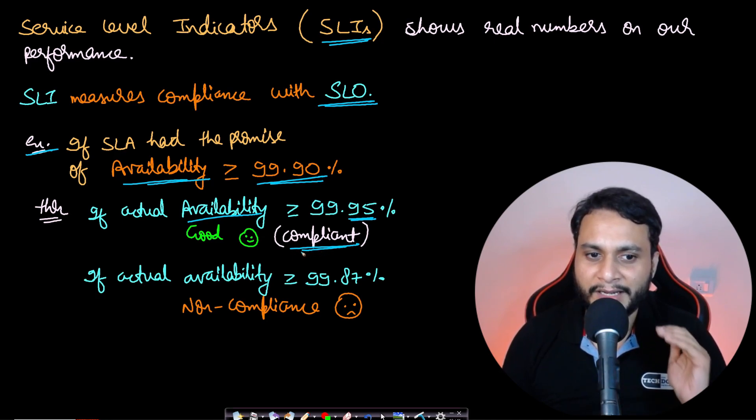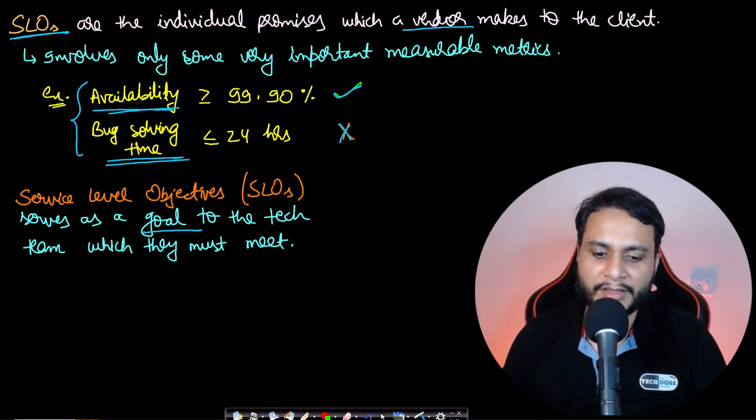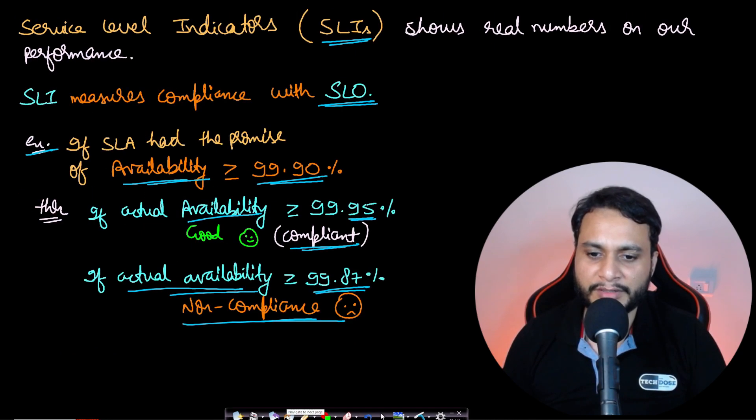And if the actual availability turns out to be 99.87%, then we are non-compliant and hence we may have to face the penalties which were mentioned in this case, which we will mention in the agreement.